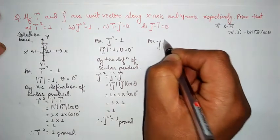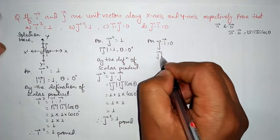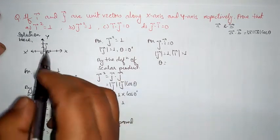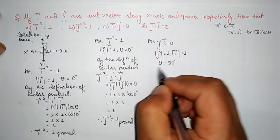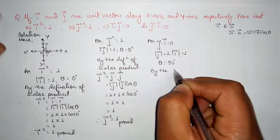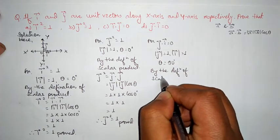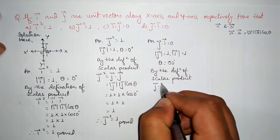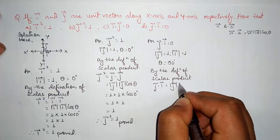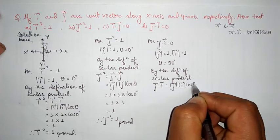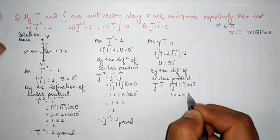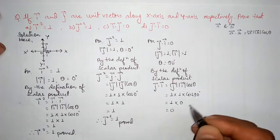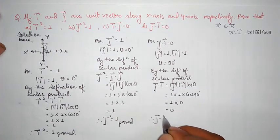Next, for j vector dot i vector equals 0: j vector is a unit vector so its magnitude is 1, and i vector also has magnitude 1. The angle between j and i is 90 degrees. By the definition of scalar product, j vector dot i vector equals magnitude of j vector into magnitude of i vector into cos of the angle between them. That is 1 into 1 into cos 90 degrees. cos 90 degrees equals 0, so 1 into 0 equals 0. Therefore j vector dot i vector equals 0 is proved.